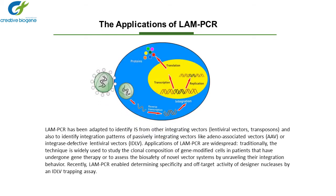LAM-PCR has been adapted to identify integration sites from other integrating vectors and also to identify integration patterns of passively integrating vectors like adeno-associated vectors or integrase-defective lentiviral vectors. Applications of LAM-PCR are widespread. Traditionally, the technique is widely used to study the clonal composition of gene-modified cells in patients that have undergone gene therapy, or to assess the biosafety of novel vector systems by unraveling their integration behavior. Recently, LAM-PCR enabled determining specificity and off-target activity of designer nucleases by an IDLV-trapping assay.